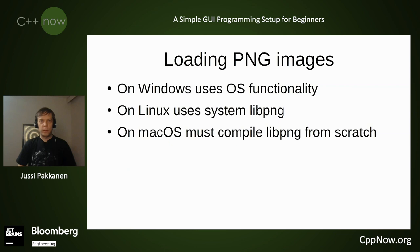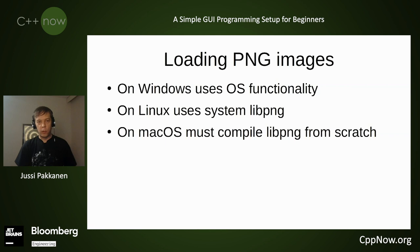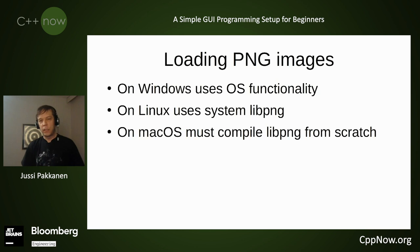The second problem is that you need to load PNG images or any sort of external graphics. On Windows, there's operating system functionality in the Win32 API where you can just load PNG images. On Linux, you're supposed to use system libpng. And on Mac, you have to compile PNG from scratch because there's no system built-in helper functionality for that. This already gets a bit tricky because you need to download, compile, and set up all sorts of platform-specific things. It's not very nice.